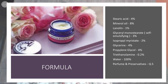The typical formula for moisturizing creams includes stearic acid, mineral oil, lanolin, glyceryl monostearate, isopropyl myristate, glycerine, propylene glycol, triethanolamine, water, perfumes, and preservatives. There are two phases: the oily phase comprises mineral oil and lanolin, and the aqueous phase comprises stearic acid and water, combined with ingredients like glyceryl monostearate for emulsification, triethanolamine, perfumes, and preservatives. Glycerine is added as a humectant to preserve the natural moisture of the skin.